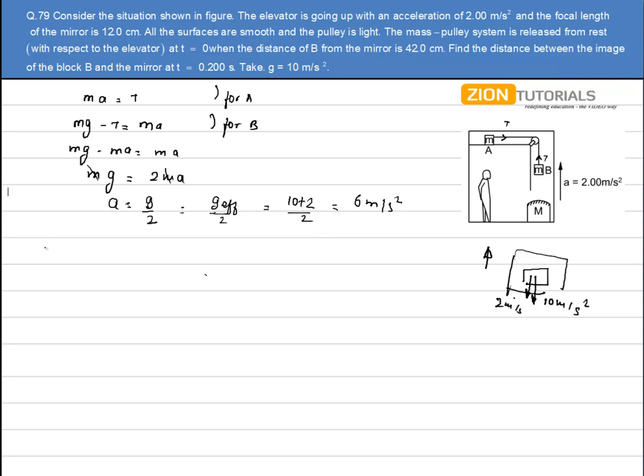So since I have the acceleration I can calculate the displacement of the B block in the first 0.2 seconds. Initial velocity is zero so displacement comes out to be half of 6 into 0.2 squared. So it comes out to be 12 centimeters.